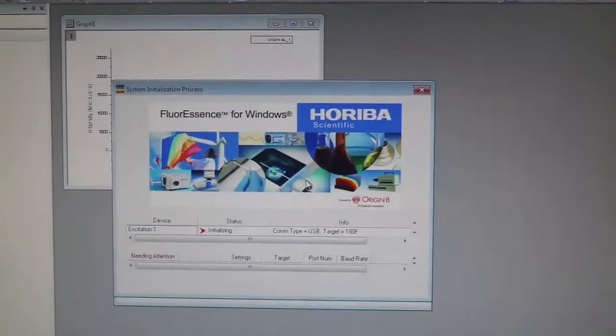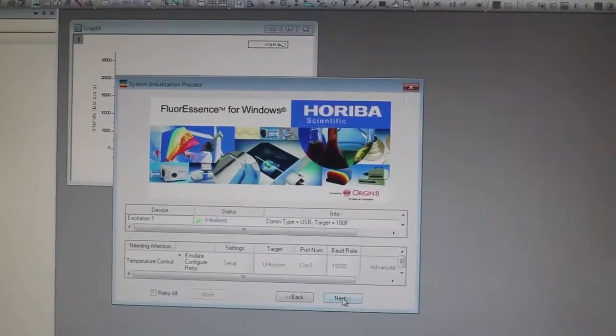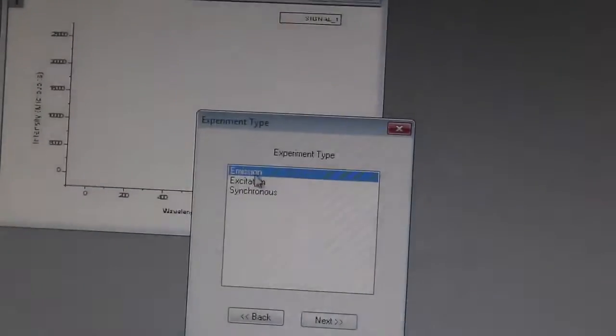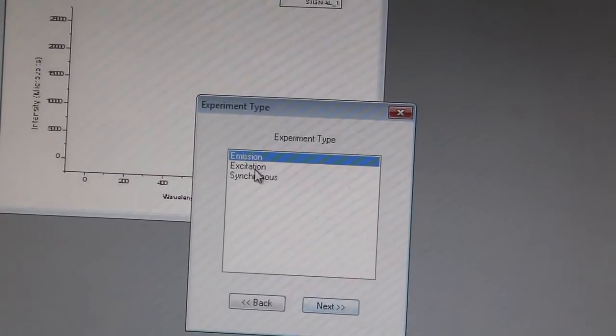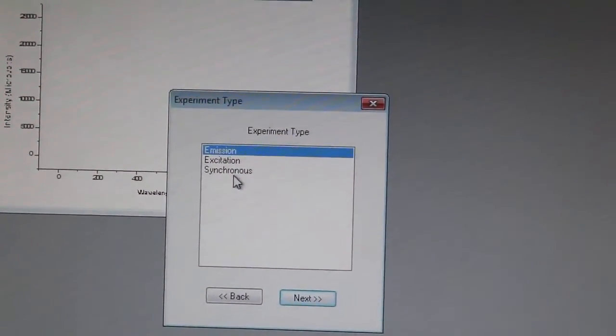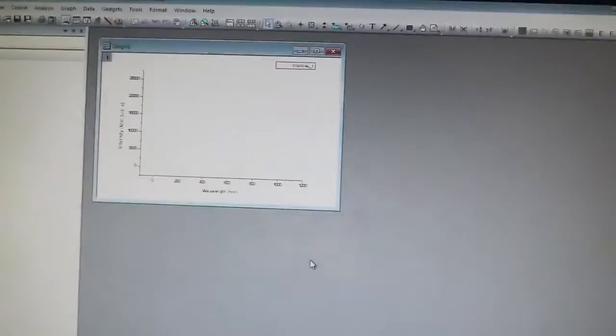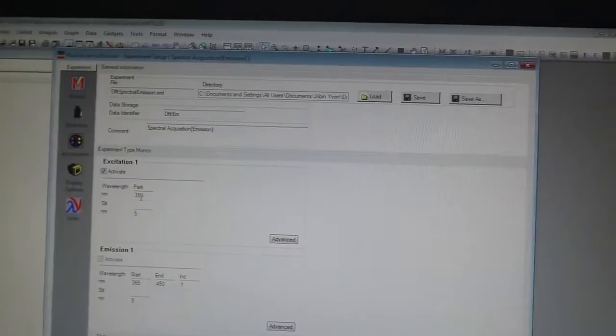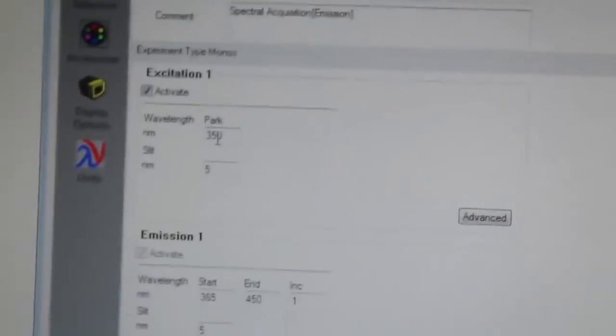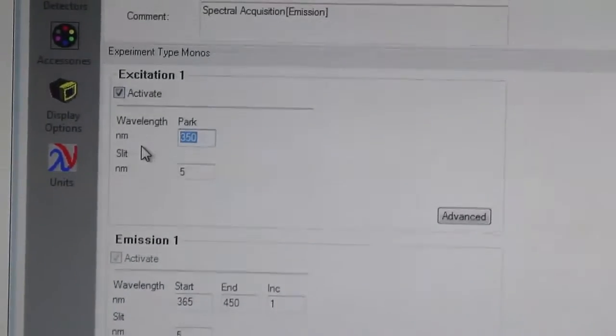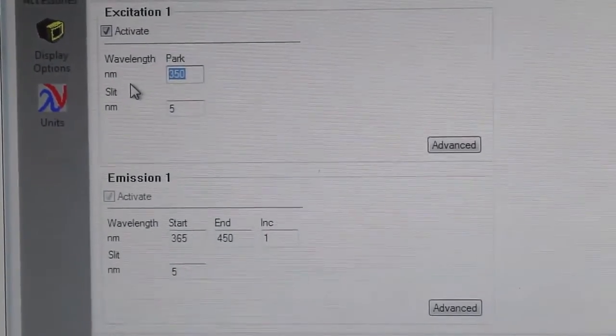In the FluoroEssence v3.5 software, click on this button which opens the experiment menu, then click next. Clicking on emission spectra—we can have excitation spectra or both synchronized, but for this experiment we will collect emission spectra. Our sample has Alexa Fluor 488 attached to one DNA and Texas Red on another.